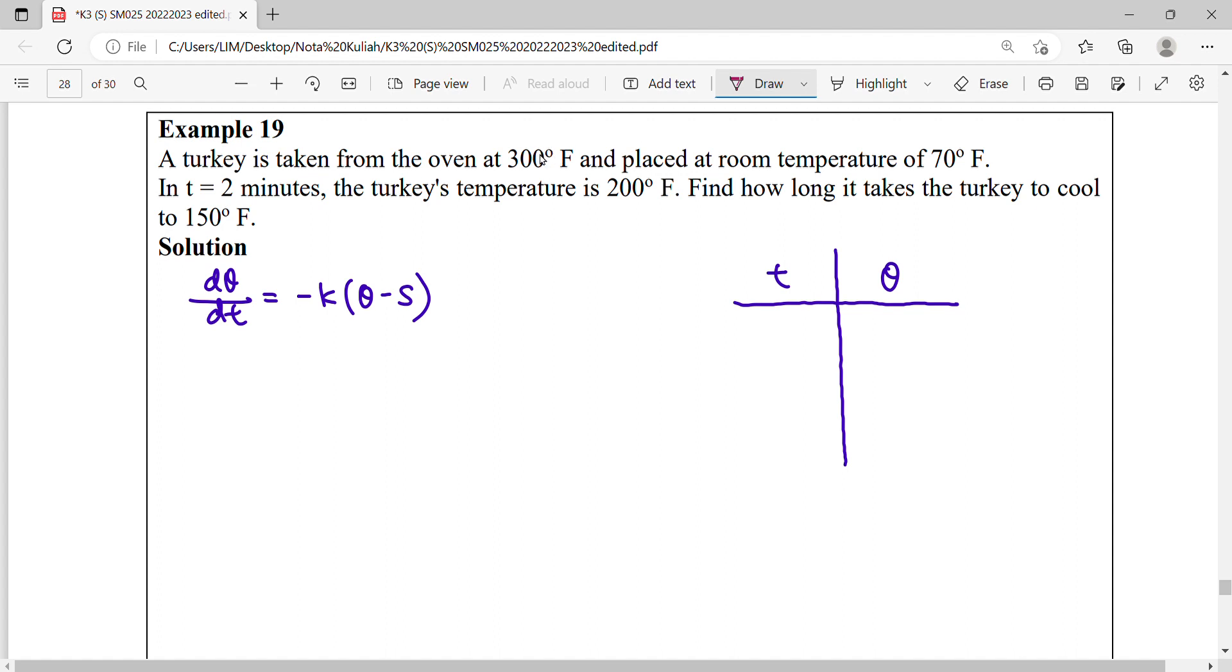Your data here is theta Fahrenheit, placed at room temperature so your surrounding temperature S will be 70 Fahrenheit. It takes two minutes, so your T here is in minutes. The turkey temperature is 200 Fahrenheit. Find how long it takes the turkey to cool to 150 Fahrenheit.